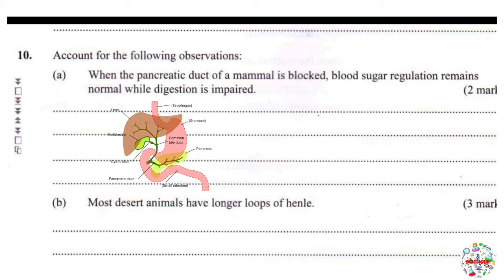However, blocking the pancreatic duct affects digestion but not blood sugar regulation. The pancreas releases two hormones — insulin and glucagon — that control blood glucose levels. Insulin is released when blood sugar is high, initiating events to bring levels back to normal. Glucagon is released when blood sugar is below normal — for example, during fasting — initiating steps to raise levels back to normal.